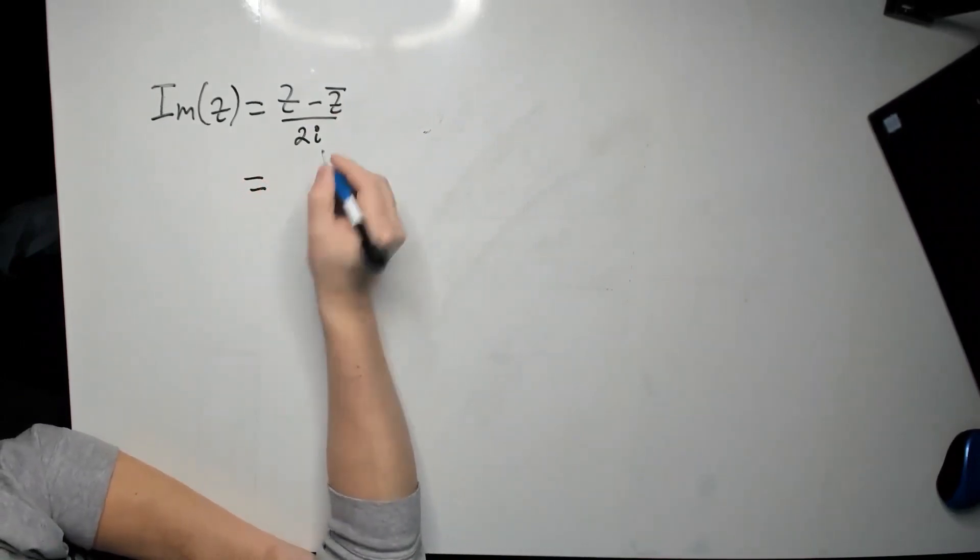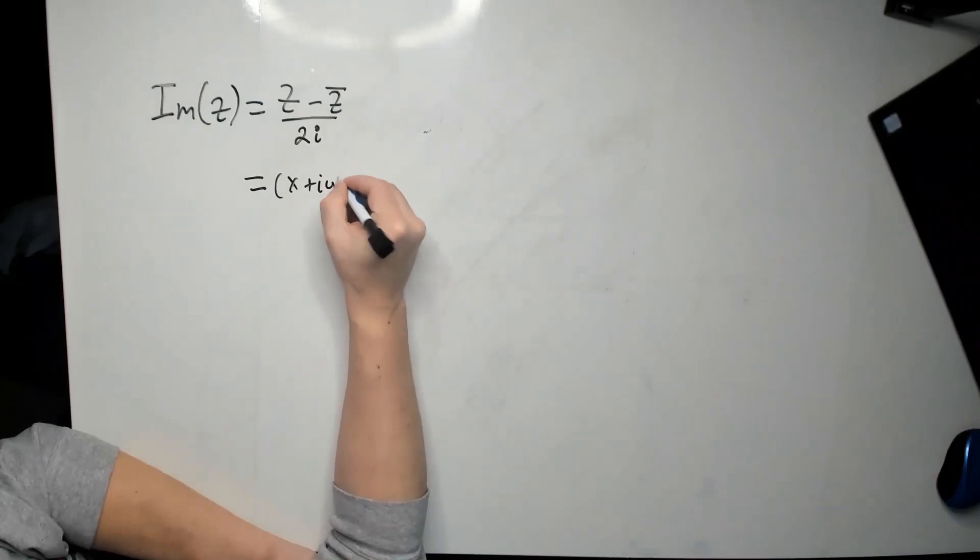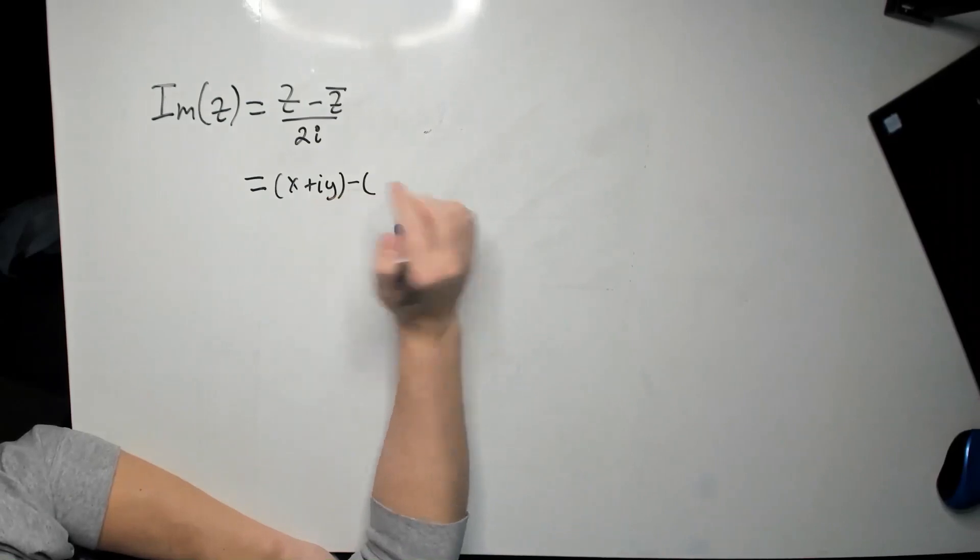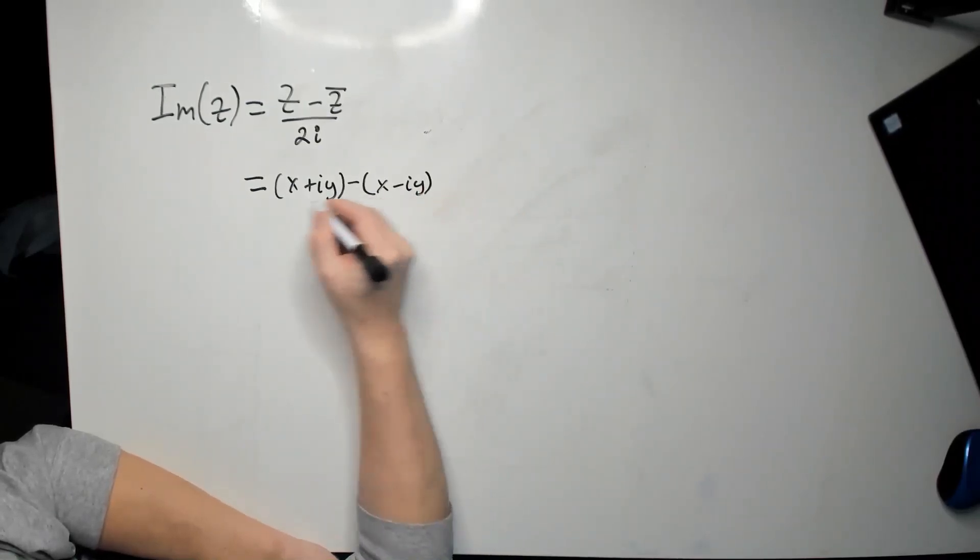So first, just introduce x plus iy to represent z, keep the minus, and the z bar is x plus yi, just change the sign in the middle to a negative, so it becomes x minus iy divided by 2i.